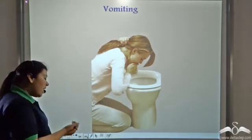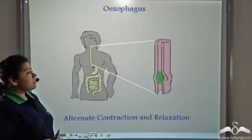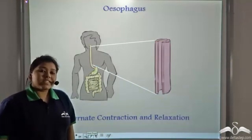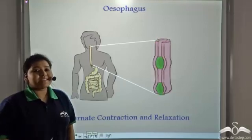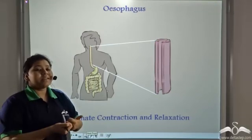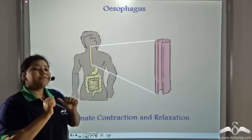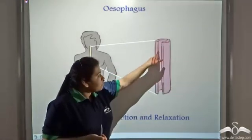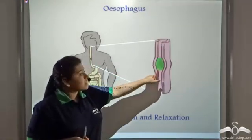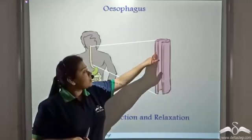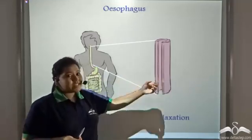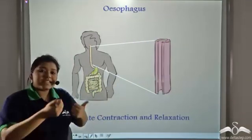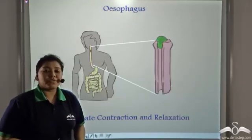What happens is that there is alternate contraction and relaxation of the muscles that form the esophagus. The esophagus consists of muscles, and alternate contraction and relaxation of these muscles facilitates the passage of food.